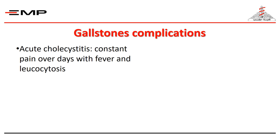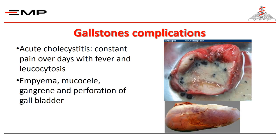A stone may impact at the neck of the gallbladder which, together with edema of mucosa due to inflammation, might obstruct bile evacuation from the gallbladder. Acute inflammation due to bacterial proliferation occurs. There will be a positive Murphy's sign with leukocytosis and moderately elevated liver function tests. A mass may be palpable as the omentum and adjacent organs adhere to the gallbladder. If the stone dislodges, as in most cases, the acute inflammation usually resolves with conservative treatment. Otherwise, the gallbladder becomes filled with pus and its wall is thickened by edema and inflammatory reaction, a condition known as empyema of the gallbladder.